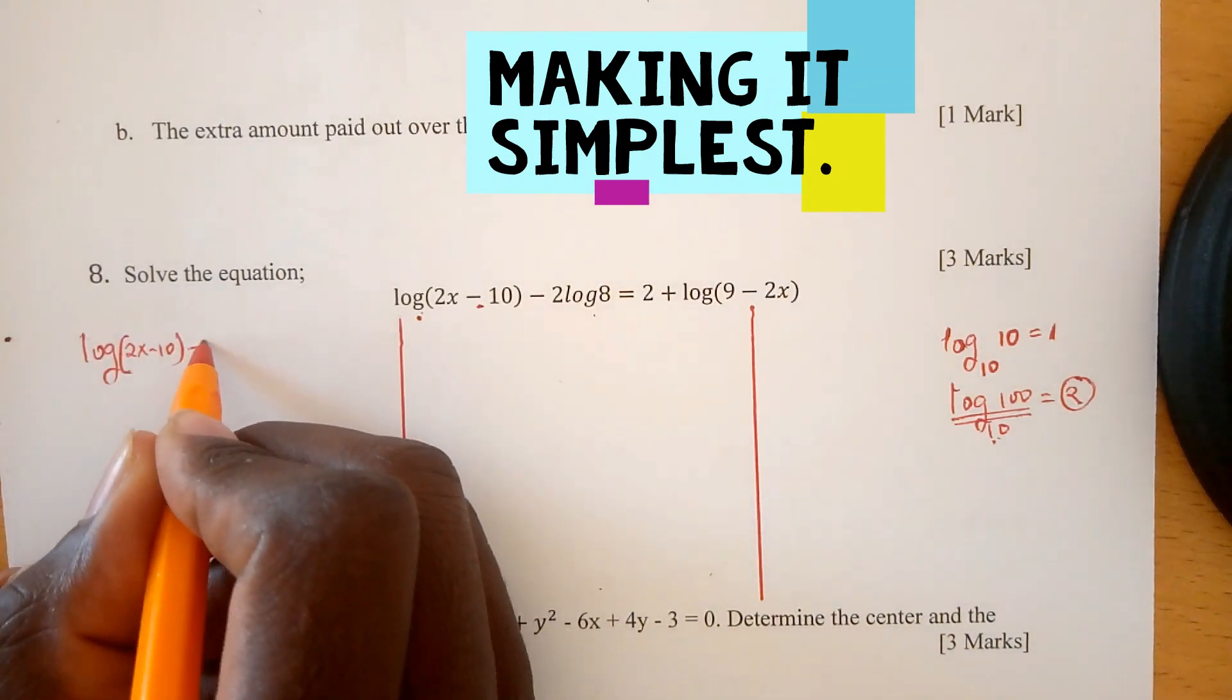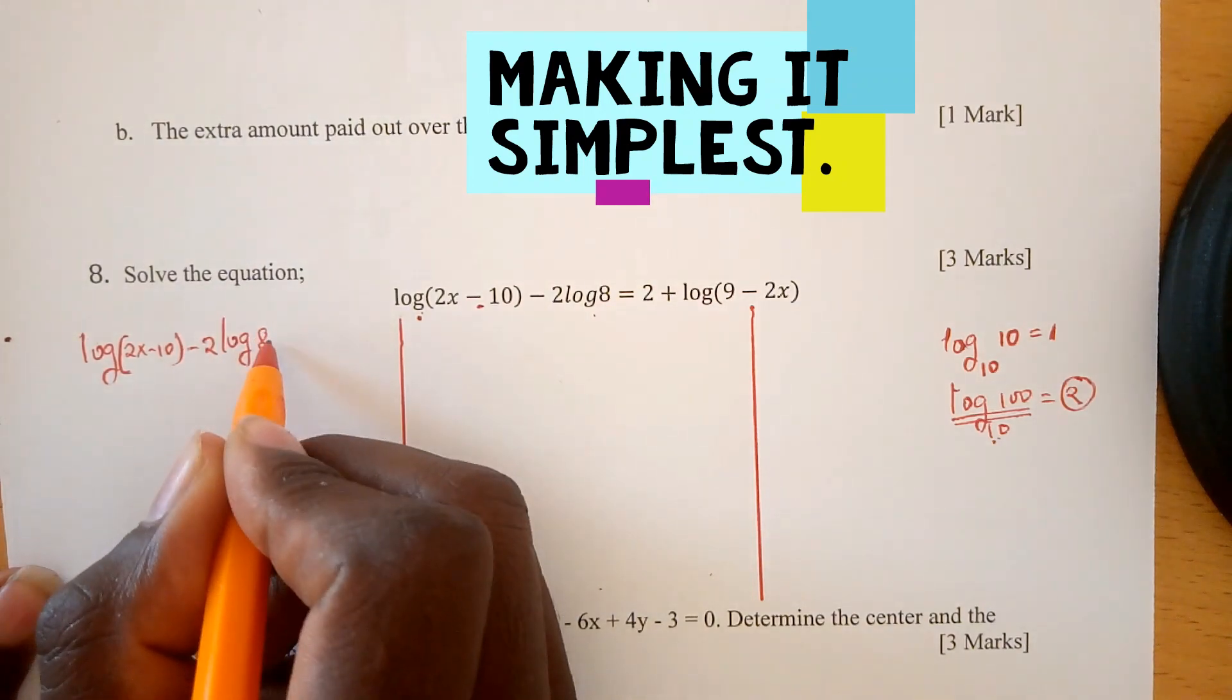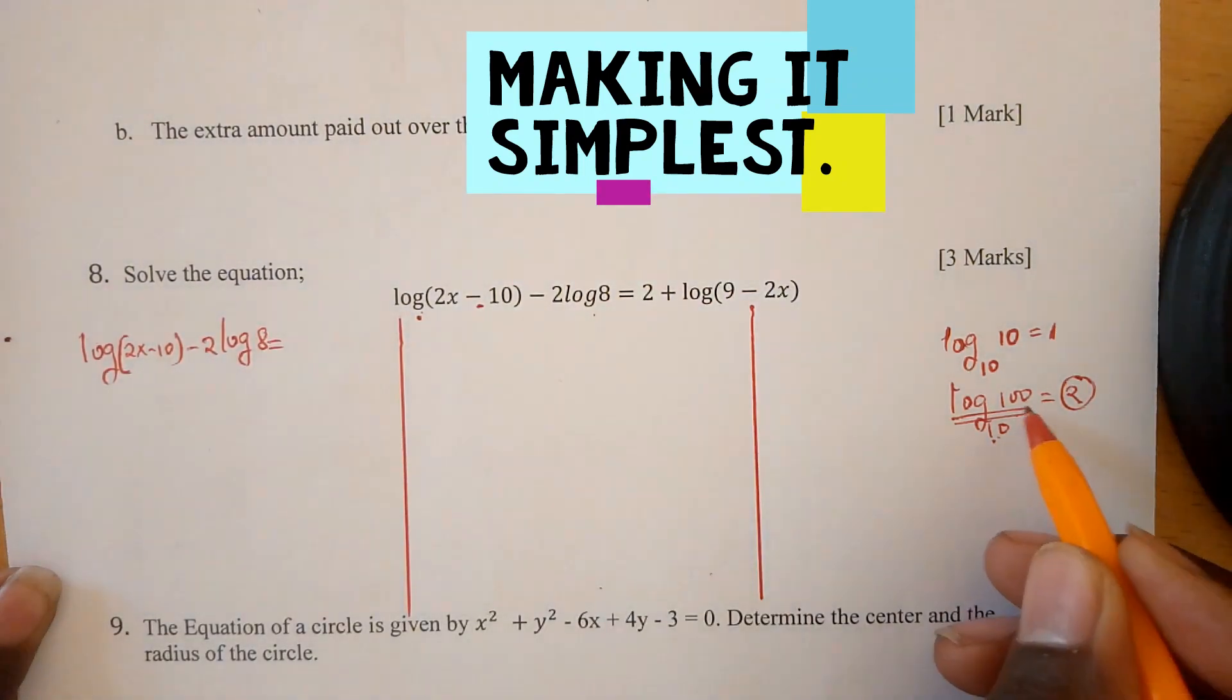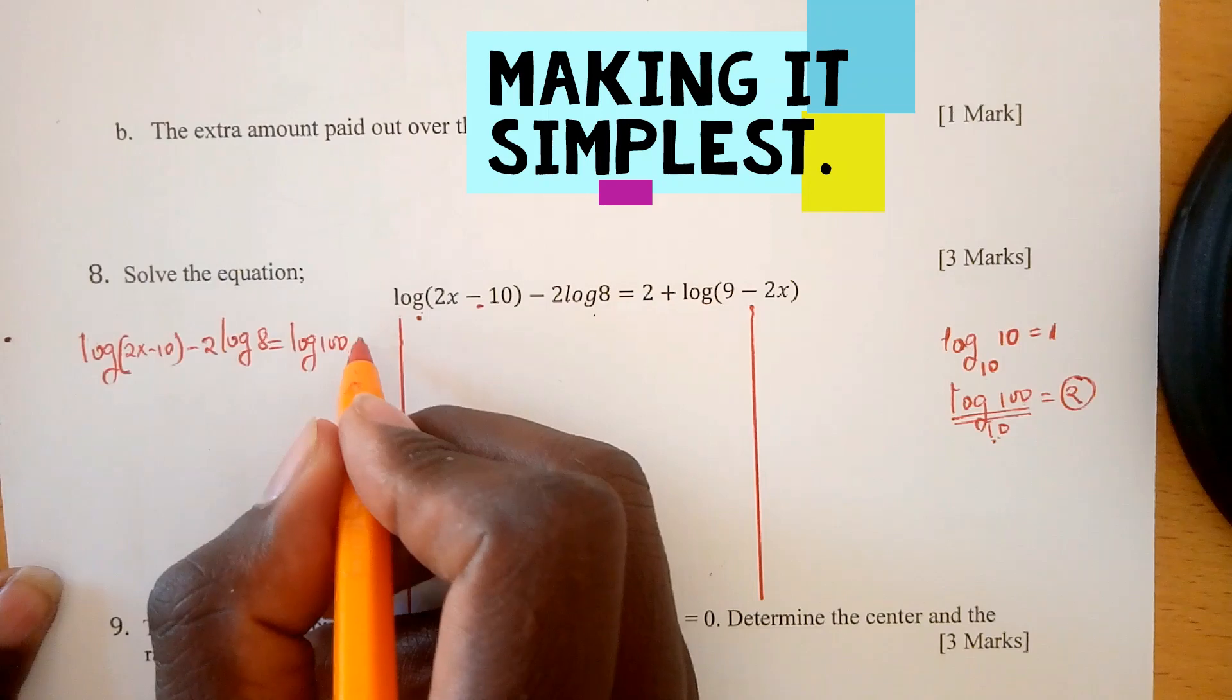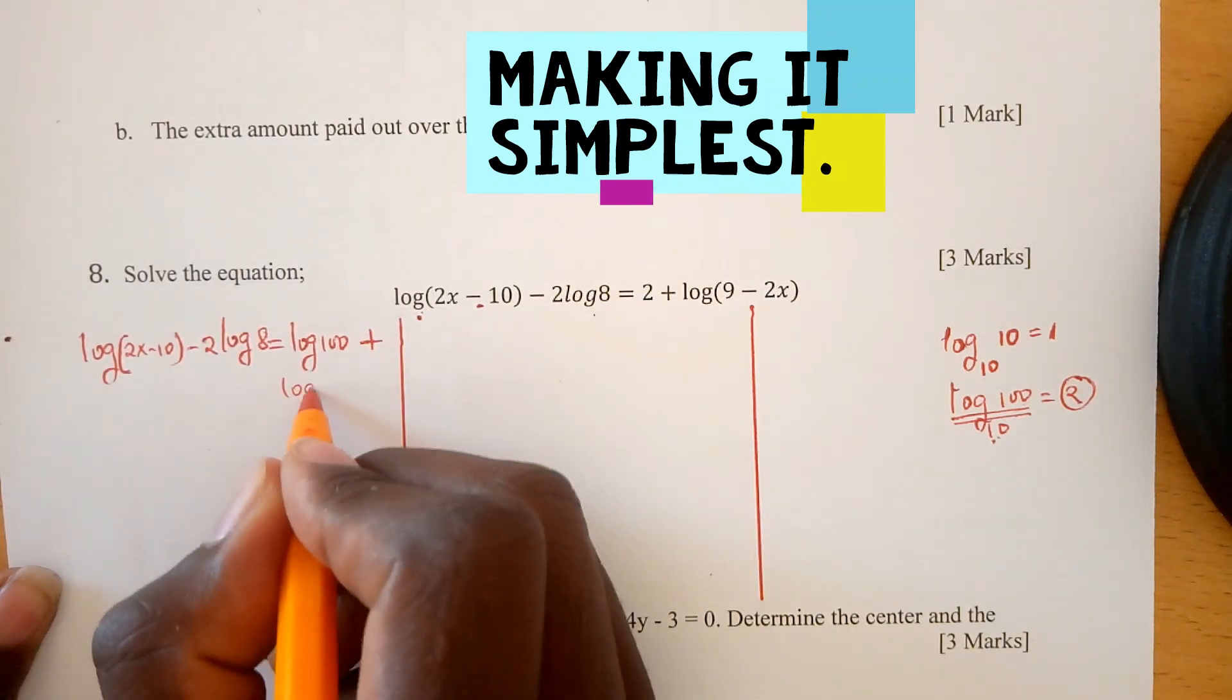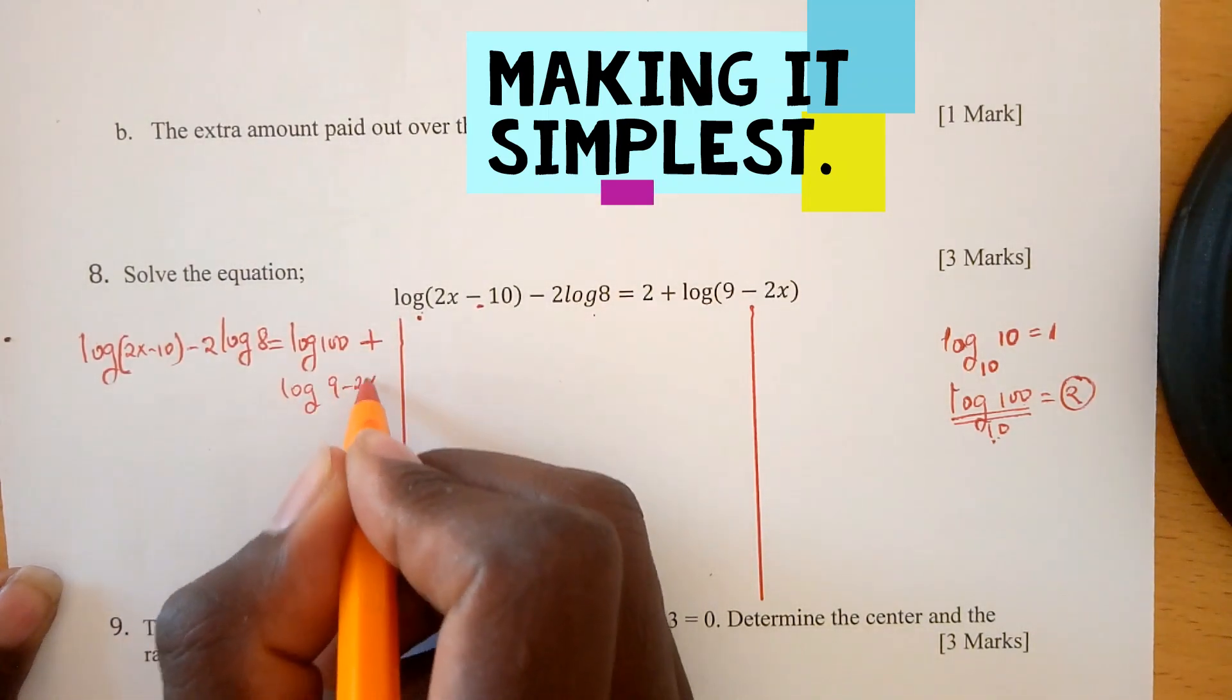minus 2log(8) equals 2, which we can write as log(100). That is log(100) + log(9 - 2x).